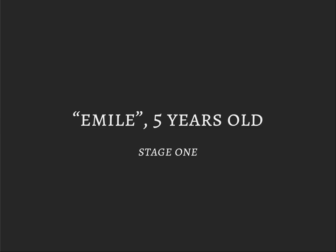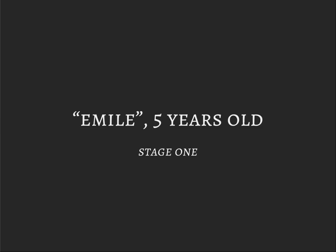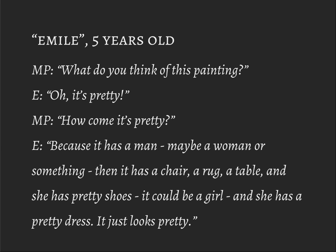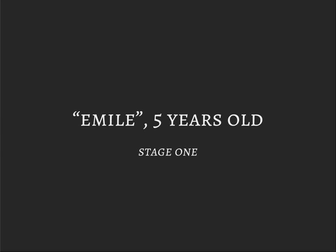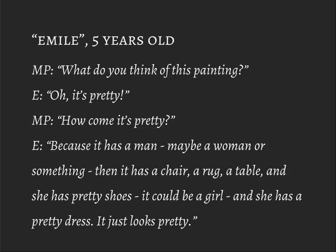So he interviews five people and analyzes what they say. He starts with Mule, who is five years old. What do you think of this painting? 'Ooh, it's pretty.' How come it's pretty? 'Because it has a man — maybe a woman or something — and then it has a chair and a rug and a table, and she has pretty shoes. Oh, it could be a girl. And she has a pretty dress. It just looks pretty.' Which part is prettiest? 'This part, the table — where the bottle and the flowers are, and the leaves and stuff. I really like it.'